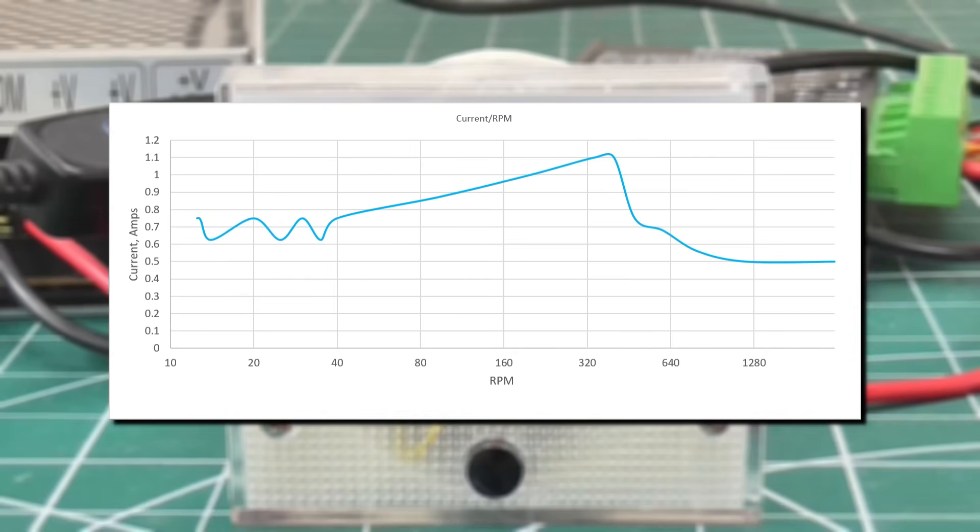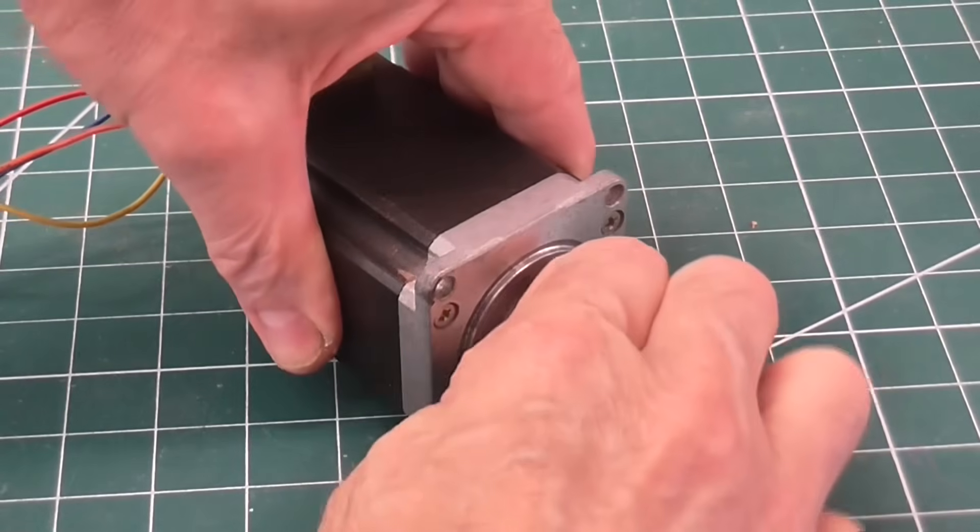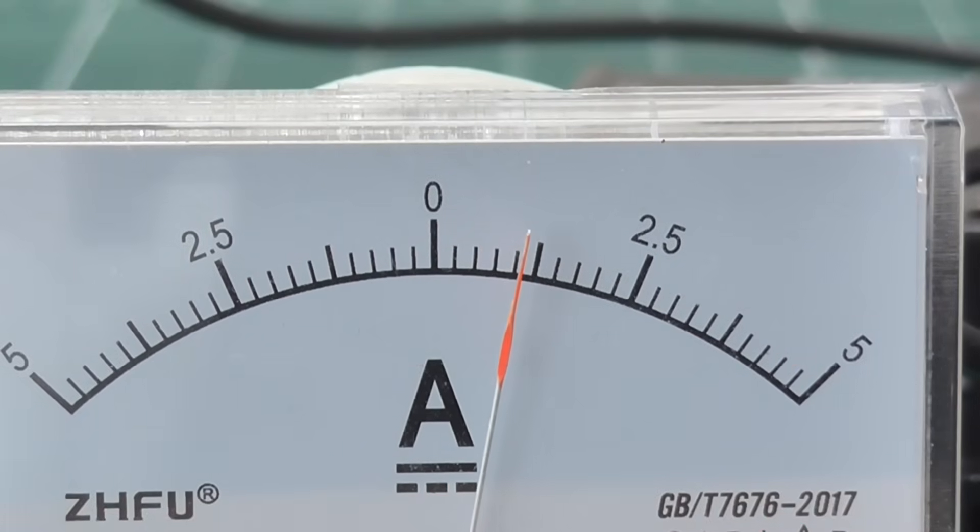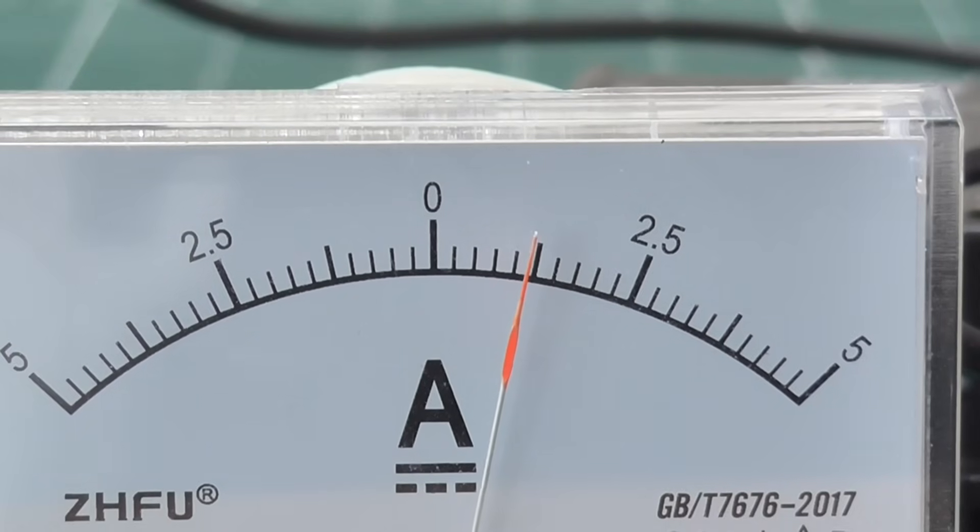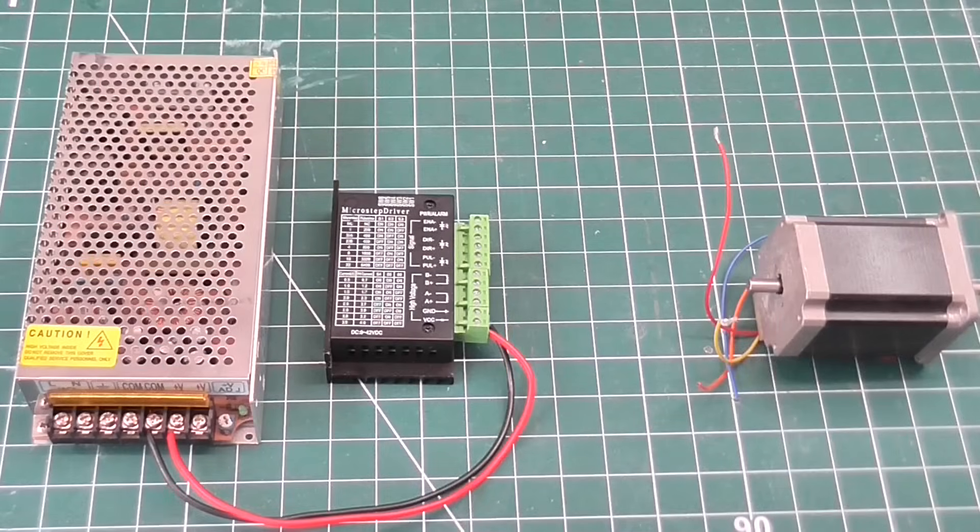So what if I now try and stop the motor when it's running at this peak current? Again, it doesn't change much. The most I can get is just under 1.25 amps. Note that these values will vary depending on the motor, driver and power supply.